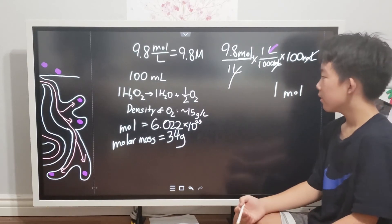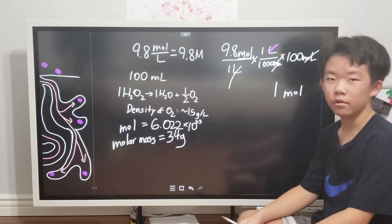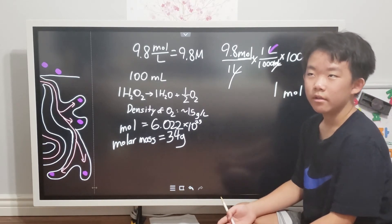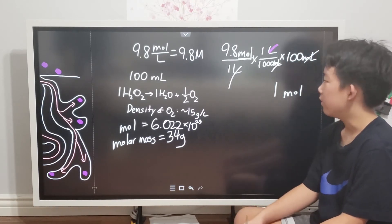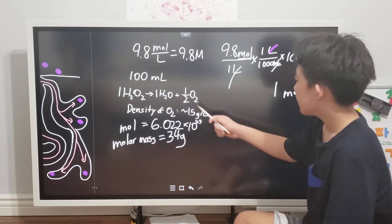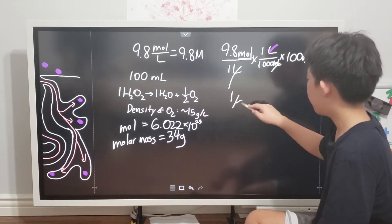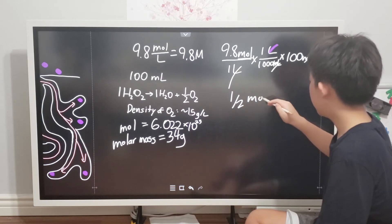As a quick side note, the half coefficient of molecules is very rare, so we're not going to be using it for a long while. Because the coefficient is half, we now know that we will have half mole of oxygen produced.